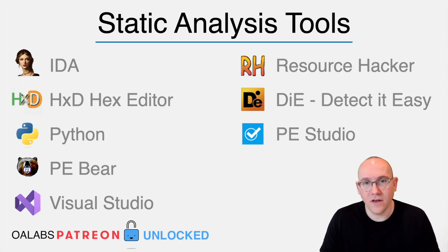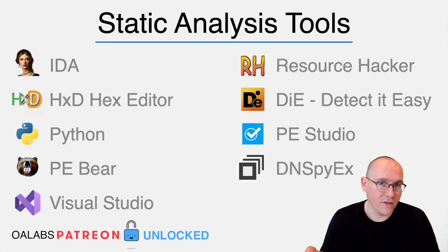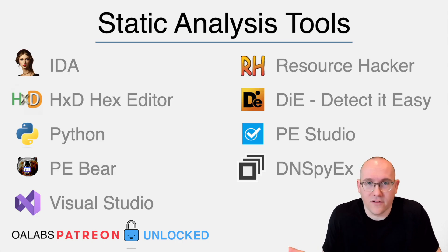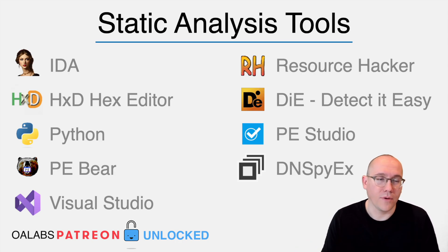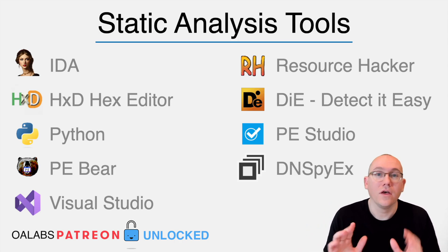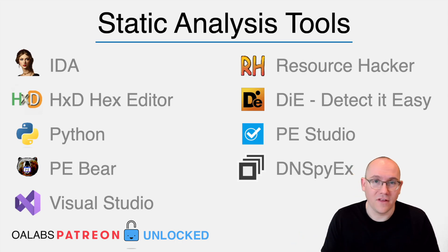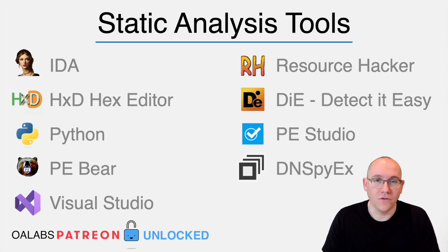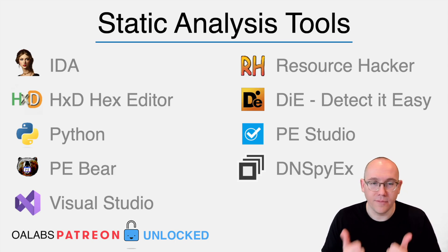I also have dnSpy-ex installed, which I recently started using instead of plain dnSpy for .NET. You can't meaningfully analyze .NET binaries in IDA, so use dnSpy for static analysis. I also have a copy of dnSpy in my dynamic VM for dynamic analysis. That's it for my static analysis VM — with those tools you should be good to go. Once you have them installed, snapshot it and you're done.